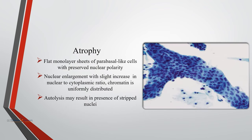Atrophy is a normal aging phenomenon associated with lack of hormonal stimulation. Cells are arranged in flat monolayer sheets of parabasal-like cells with preserved nuclear polarity. There is nuclear enlargement with slight increase in nuclear-to-cytoplasmic ratio. Chromatin is uniformly distributed, but drying may result in the presence of stripped nuclei.